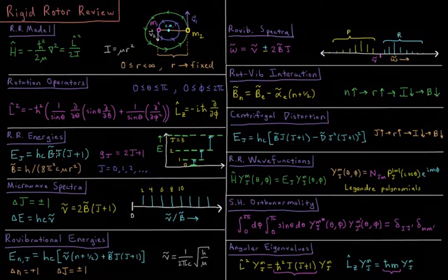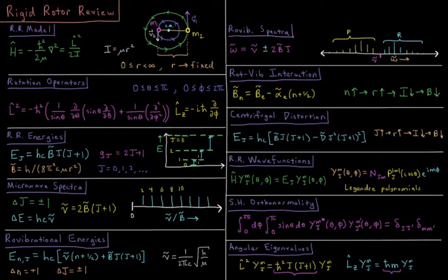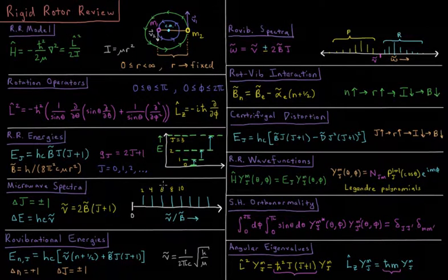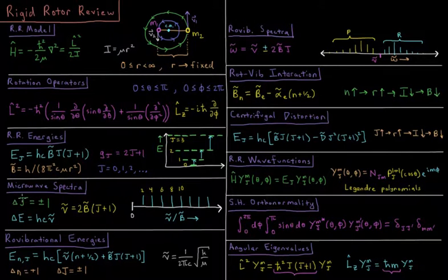We have quadratically spaced energy levels, with each successive level increasing by an additional amount: from j=0 to j=1 is 2b-bar, from j=1 to j=2 is 4b-bar, from j=2 to j=3 is 6b-bar, and so on. This gives us a microwave rotational spectrum as a set of evenly spaced lines under the rigid rotor model, with the selection rule that delta j equals plus or minus 1.